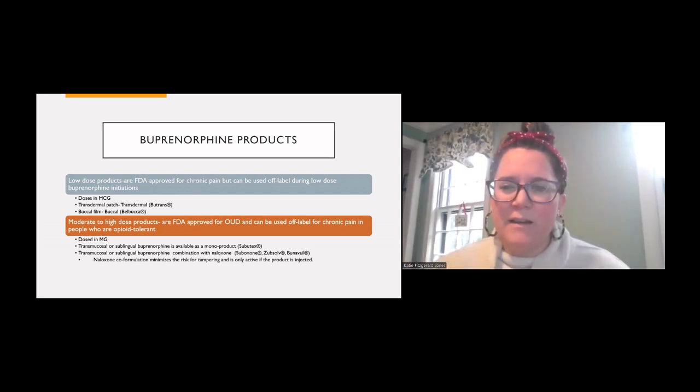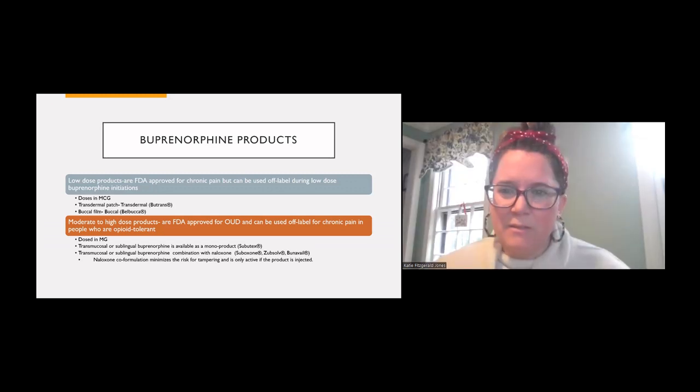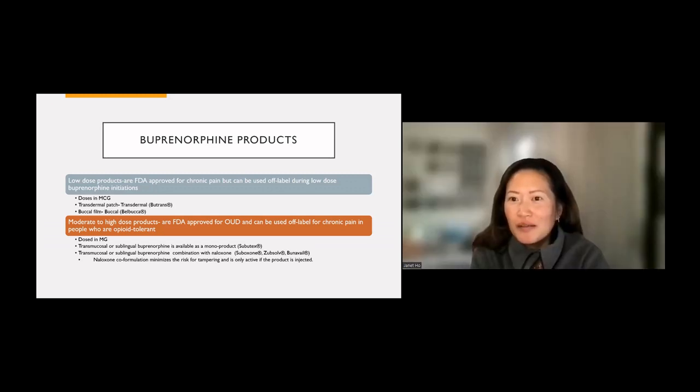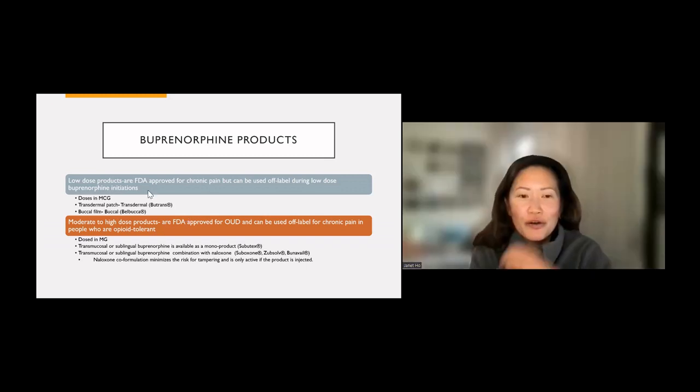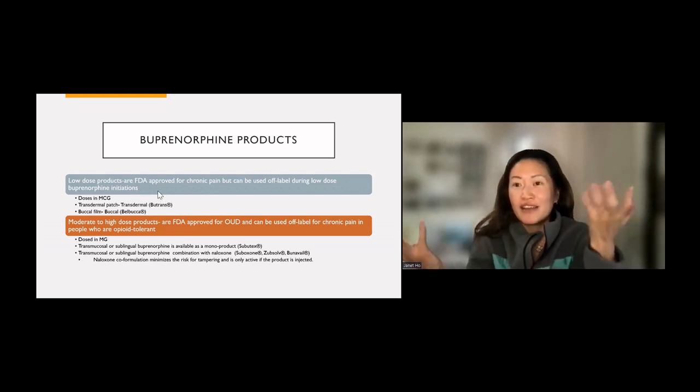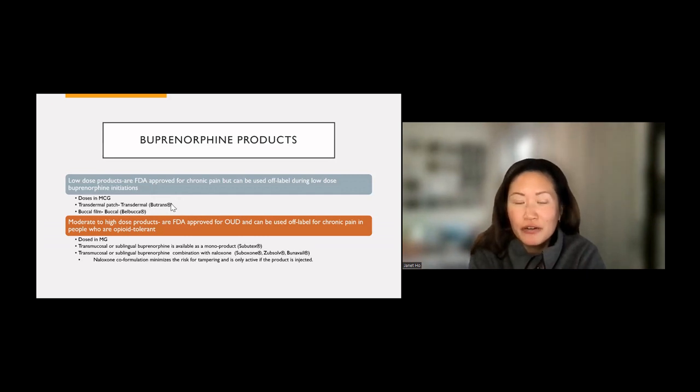Yes, thank you. So the combo product, buprenorphine-naloxone, is really FDA-approved for the treatment of addiction. And as Katie pointed out, the naloxone is considered to be only active as a misuse deterrent if somebody were to inject or were to inhale, like snort their suboxone or buprenorphine. Both of these monoproduct and the combo product come in generic, and the monoproduct, the buprenorphine alone, is cheaper than the combination product. And so anyway, unless you have a clear indication for using the combination product and cost is a prohibitive factor, there may be ways to use either that's available for you.